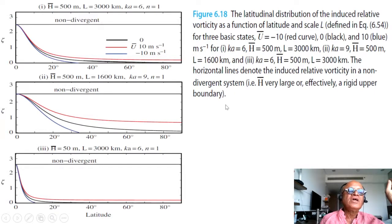We want to understand how the turning latitude or the change from the waveform to exponential decay depends on these parameters: wave numbers, depth, scale of the horizontal flow, and in terms of induced vorticity. Obviously, we have to remember that if h bar is very large or effectively there is a rigid upper boundary, then the induced relative vorticity is going to be this one.